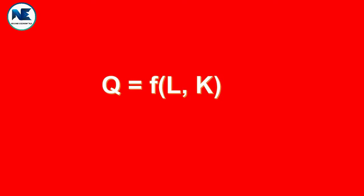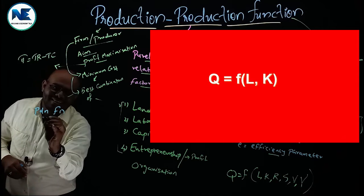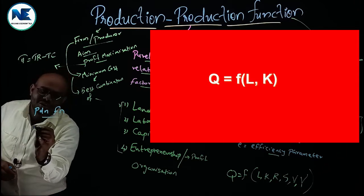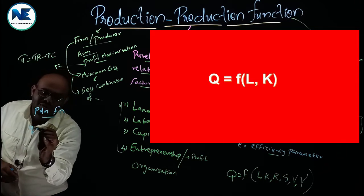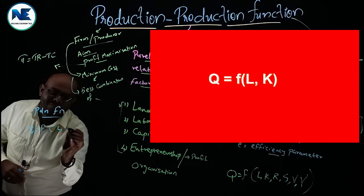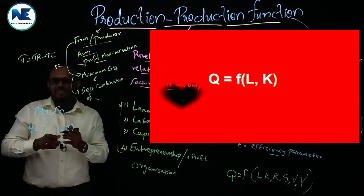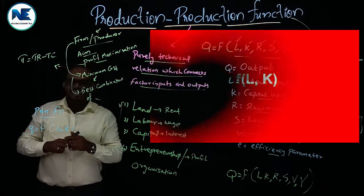To simplify, the production function can be written as: Q = f(L, K), meaning output Q is a function of labor L and capital K. This is the simple format, and here we are assuming only two factors of production — labor and capital.